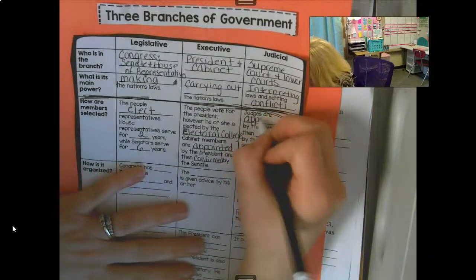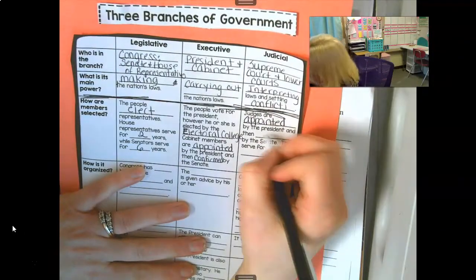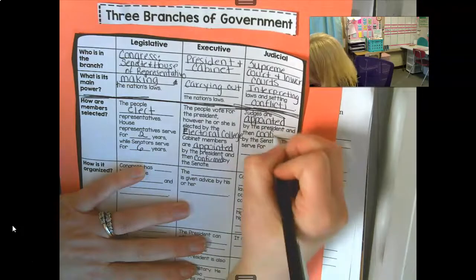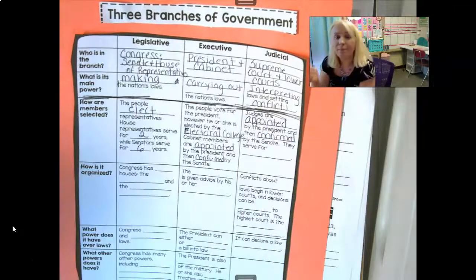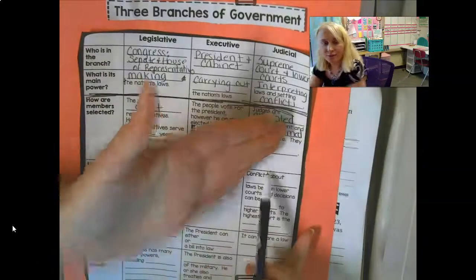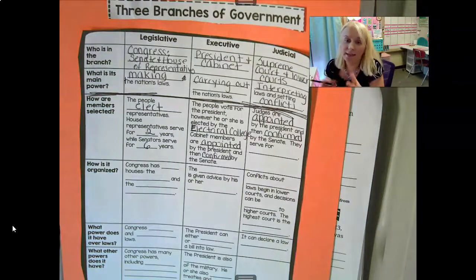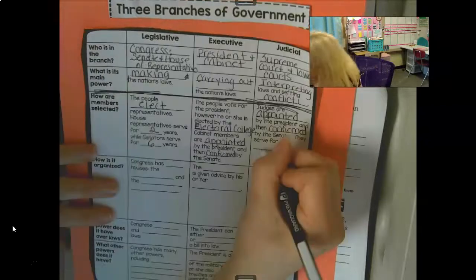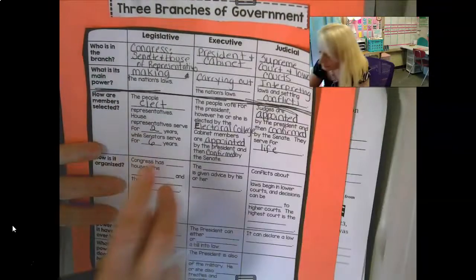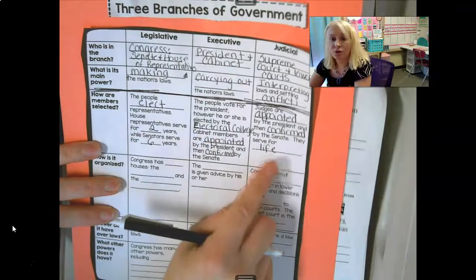Judges are appointed by the president — again, he's picking them — and then confirmed by the Senate. The Senate has to give their stamp of approval on these advisors for the president and these judges. So again, the power is not all in one person's hands; it's shared. They serve for life, unlike the legislative members who have elections.